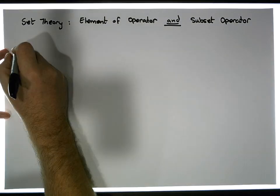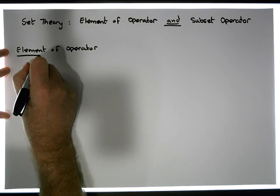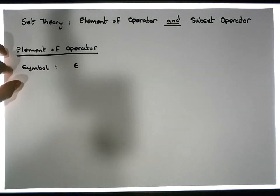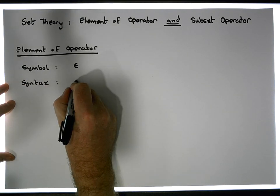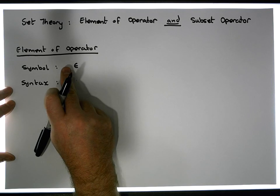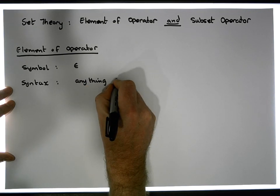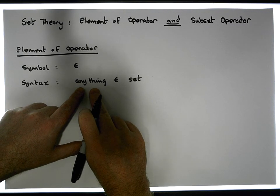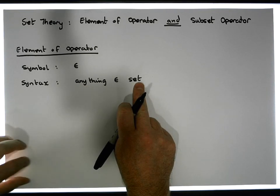Let's concentrate on the element-of operator. Its symbol looks something like this — like an epsilon — and that represents 'element of.' Its syntax: it's a binary operator that takes two operands, one on the left and one on the right. It can take anything on the left, but what must follow on the right-hand side is a set. It tests to see whether whatever is listed on the left-hand side appears within the set on the right-hand side.